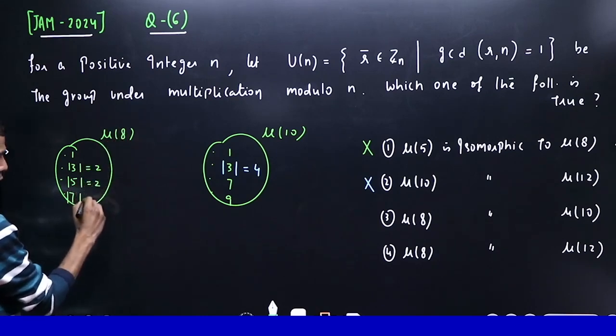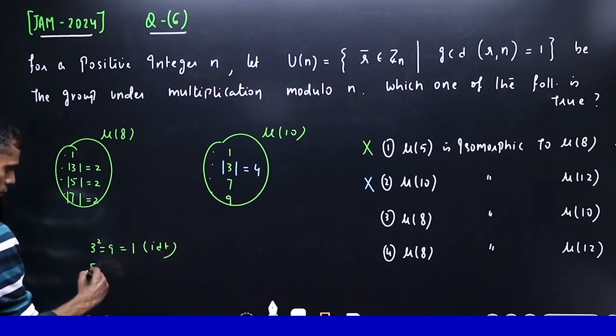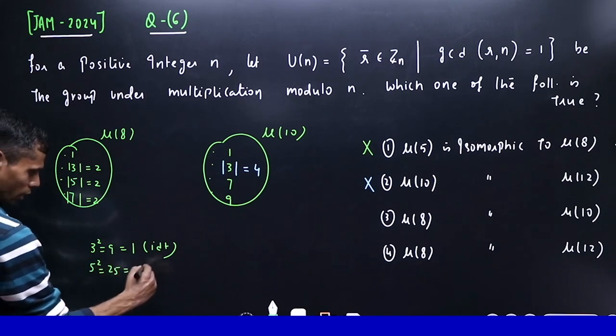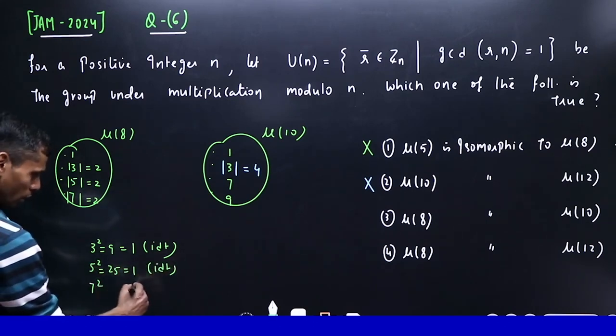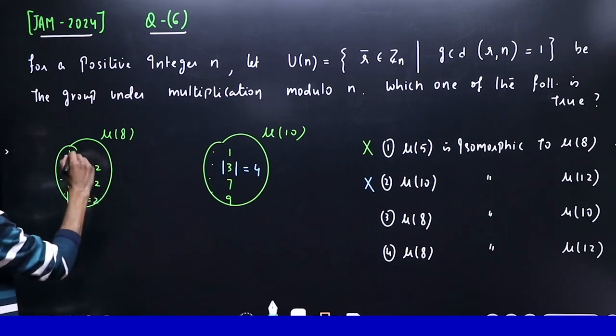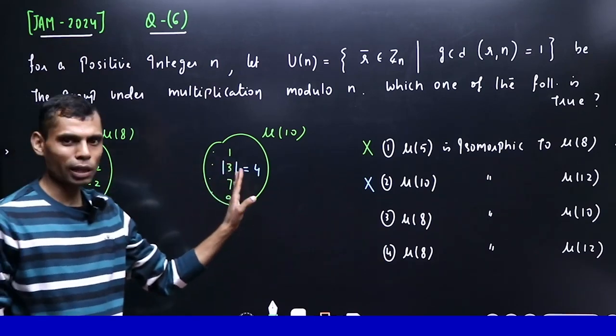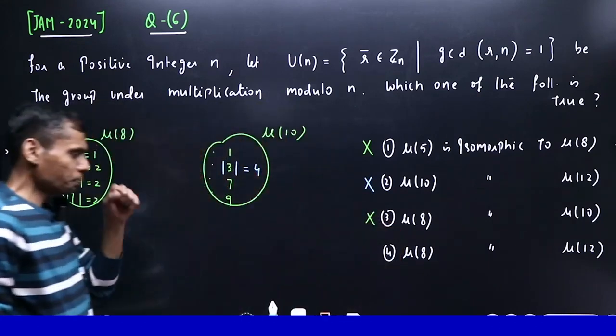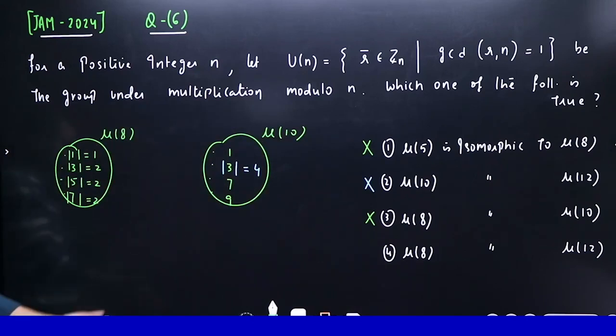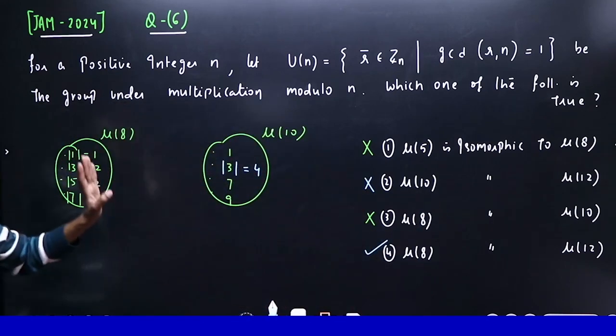7² will also be 1 modulo 8. So all of them have second power as identity, meaning their corresponding order is 2. Identity is not among these. So this group contains no element of order 4, while this group has an element of order 4. The third part is also not correct. Obviously the first, second, and third are not correct, so the last one must be correct. With logic and super logic, we've solved the question. Thank you very much. Now let's move to the next question.